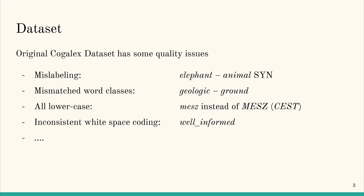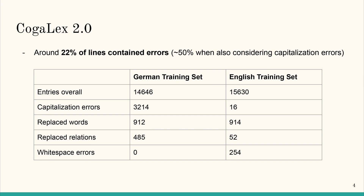Mismatched word classes like 'geologic' and 'ground' also make classification difficult. The dataset is all lower-cased, which is especially problematic for German, but also for other languages — for example, when acronyms are involved. Inconsistent white space is also a problem. Additionally, duplicate term pairs were also present in the dataset.